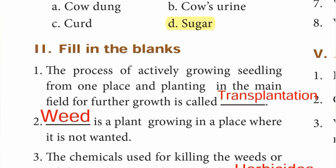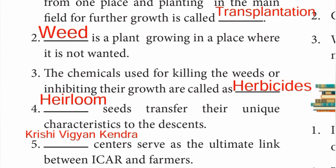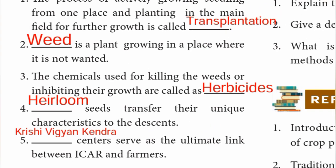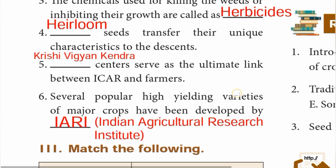Moving to Roman number 2: fill in the blanks. First one: the process of actively growing seedling from one place and planting in the main field for further growth is called transplantation. Second: a plant growing in a place where it is not wanted — answer is weed. Third one: the chemicals used for killing the weeds or inhibiting their growth are called herbicides. Fourth one: seeds that transfer their unique characteristics to the descendants — answer is heirloom.